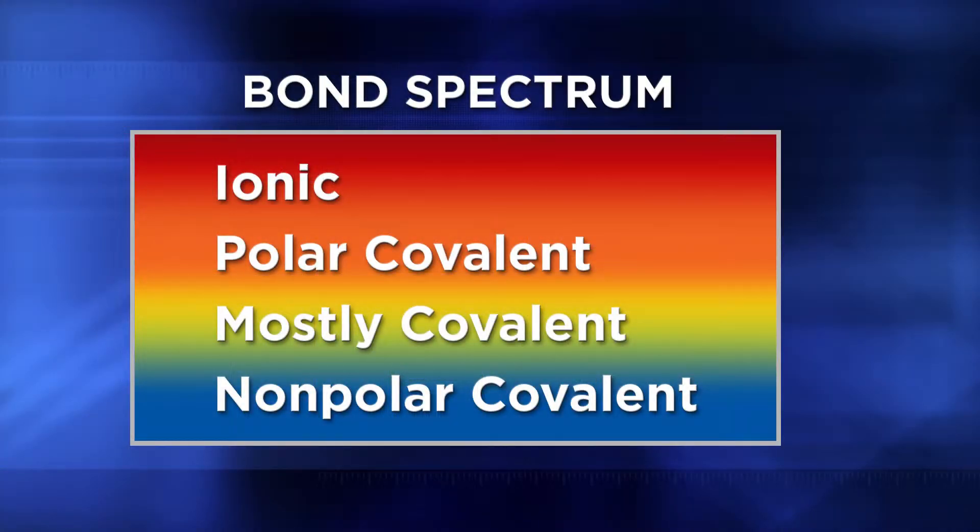By now you have a solid, general understanding of how intramolecular bonding works. You should also have a better sense of the various types or ranges of bonds that hold matter together to make up our physical world. So now we're going to learn how to predict what kind of intramolecular bond a substance has and where that bond would lie along the bond spectrum. This activity will help you visualize the types of bonds that form as atoms come together to make molecules and compounds.